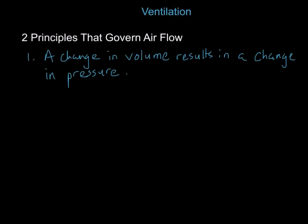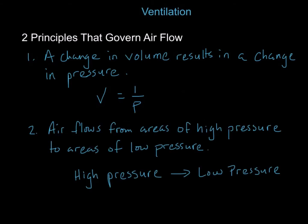In ventilation, there are two principles that govern air flow. The first principle is that a change in volume results in a change in pressure. The relationship between volume and pressure in ventilation is that volume is inversely proportional to pressure. The second principle is that air flows from areas of high pressure to areas of low pressure.